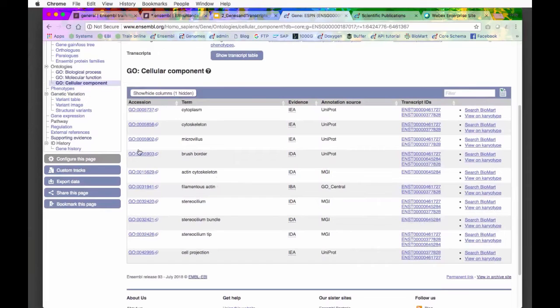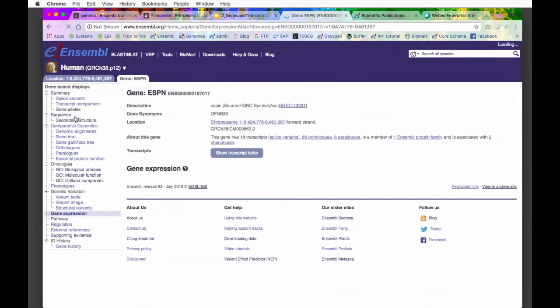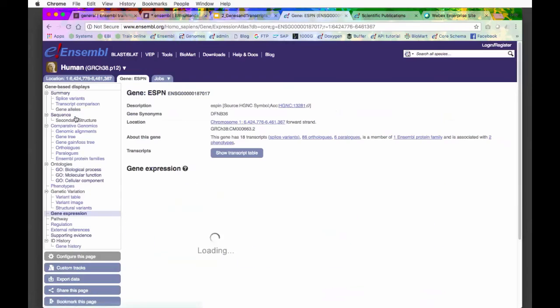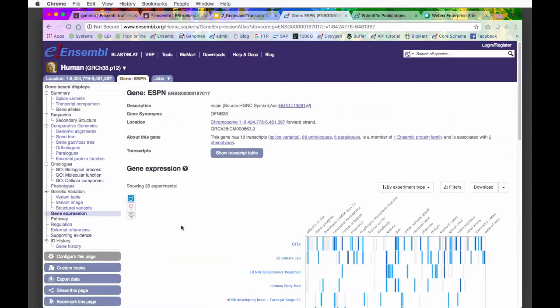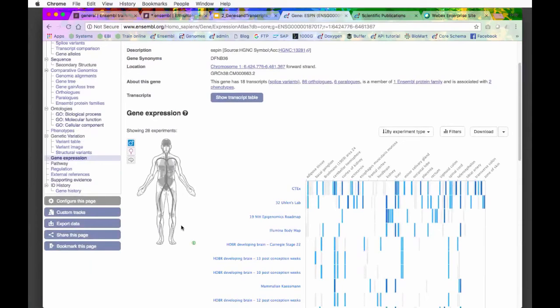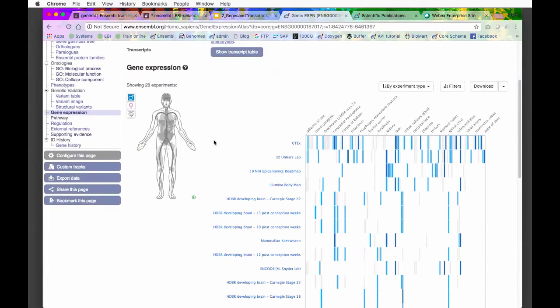I want to know where it does this in the body. I can go to Gene Expression, which is here in the menu. This shows me everywhere that we see expression of this gene. This is that little widget that comes from Expression Atlas. The group from EMBL-EBI will be having a lecture from Expression Atlas.